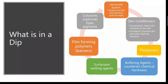In a dip we have the germicidal system, which is the killing component, colors and dyes to make sure that on the farm level we can see if cows are getting dipped or not, the film forming polymers, sometimes the barriers, surfactants, buffering agents, thickeners, and skin conditioners are a big impact in the dip. Especially on the post side, we want to see that skin conditioner being at a good percentage depending on what the cows are going through.